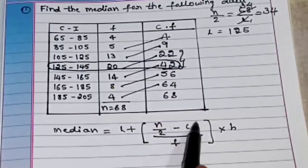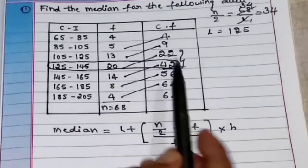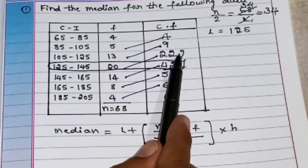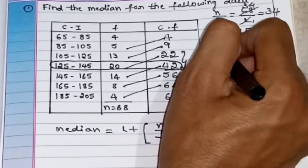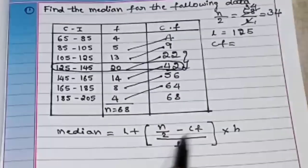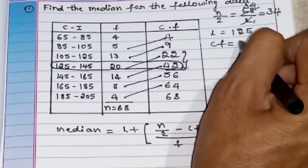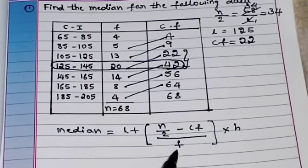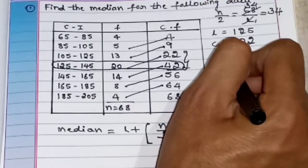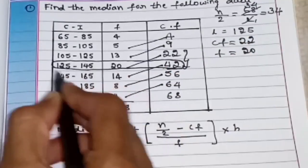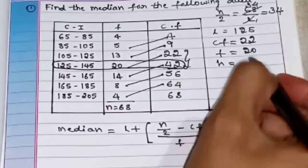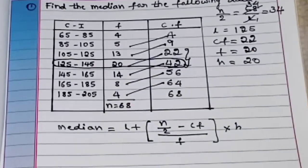n by 2 is already known — it is 34. Now what is cf? The cf is the cumulative frequency just above the median class — that is 22. And f is the frequency of the chosen median class, which is 20. And h is the class interval size, which is 20. So now we have all the values.